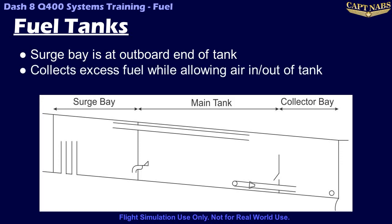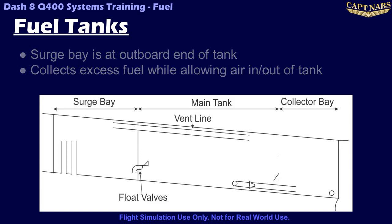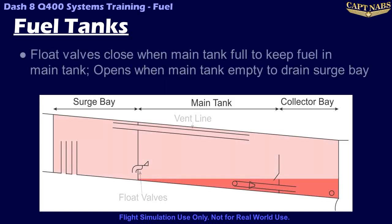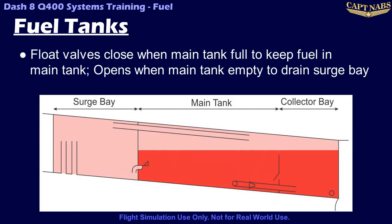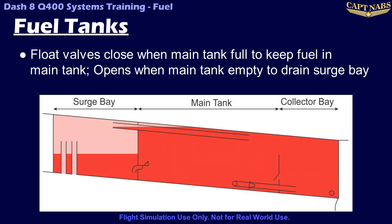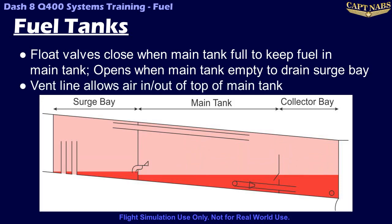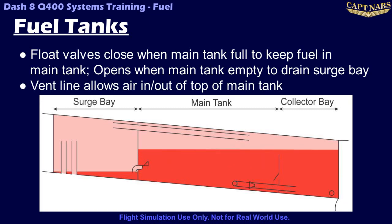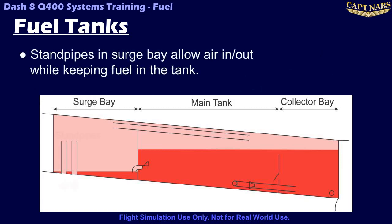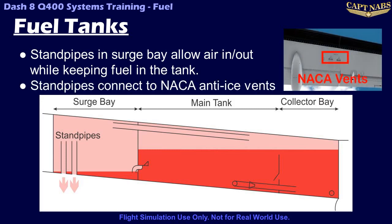The surge bay is connected to the main tank by two float valves and a vent line. The float valves close as the main tank fills, so fuel cannot enter the surge tank from the main tank. But fuel that ends up in the surge bay can flow back into the main tanks when the fuel level drops. The vent line is located at the top of the main tank, and mainly vents fuel vapors into the surge bay as the tanks fill, and allows air into the tanks as they empty. Two standpipes in the surge bay are connected to NACA anti-icing vents located under the wing, and allow air in or out of the surge bay as the fuel level in the main tank rises and falls.